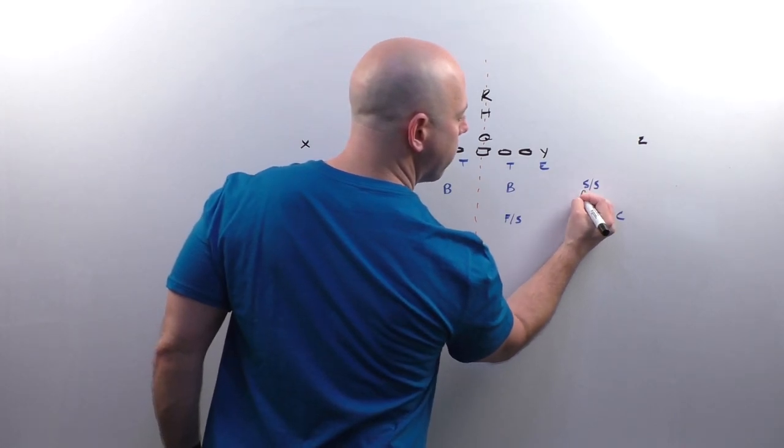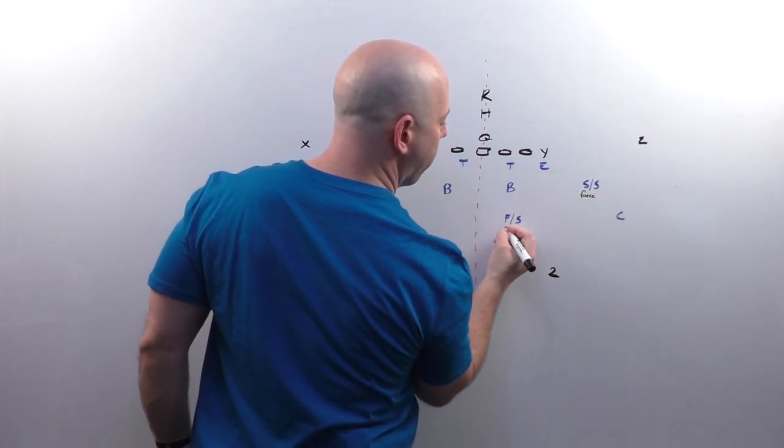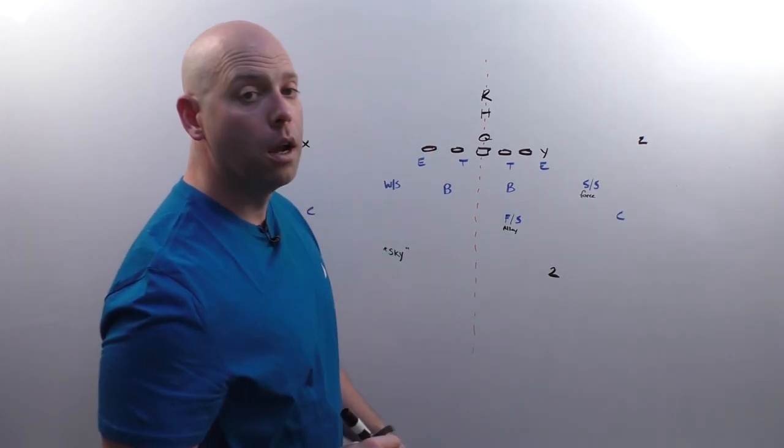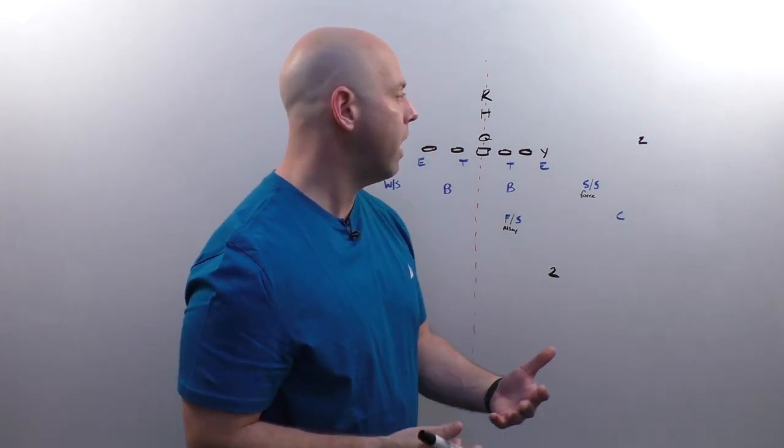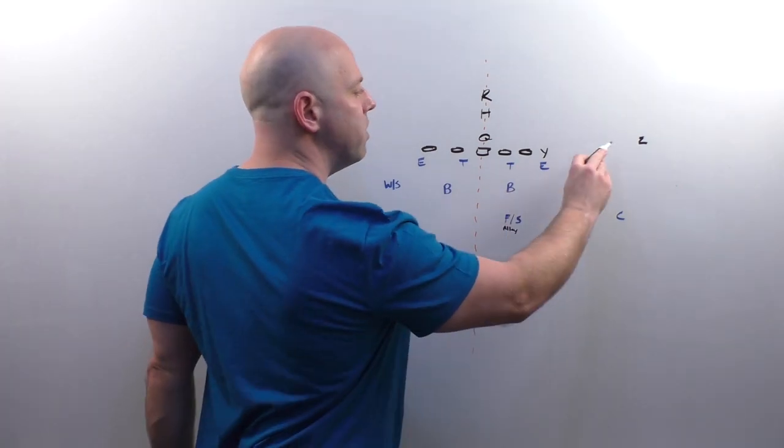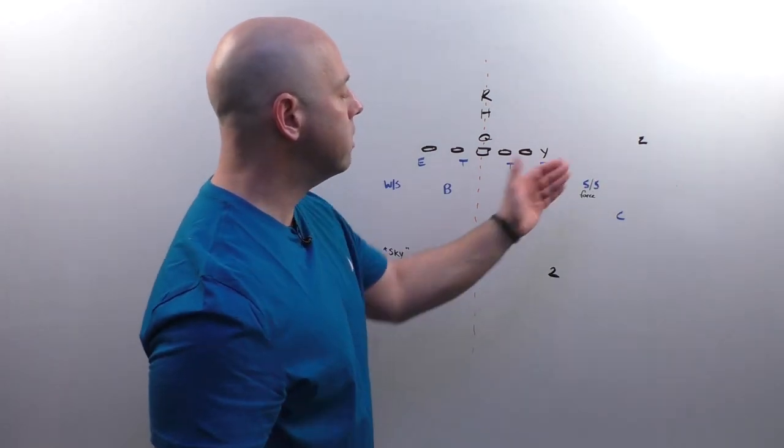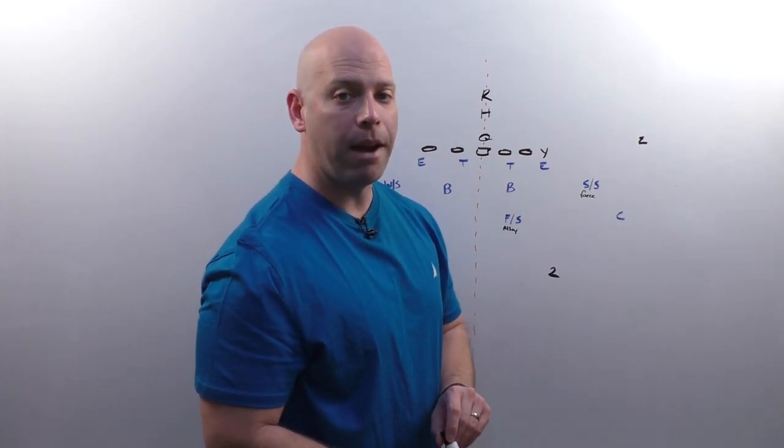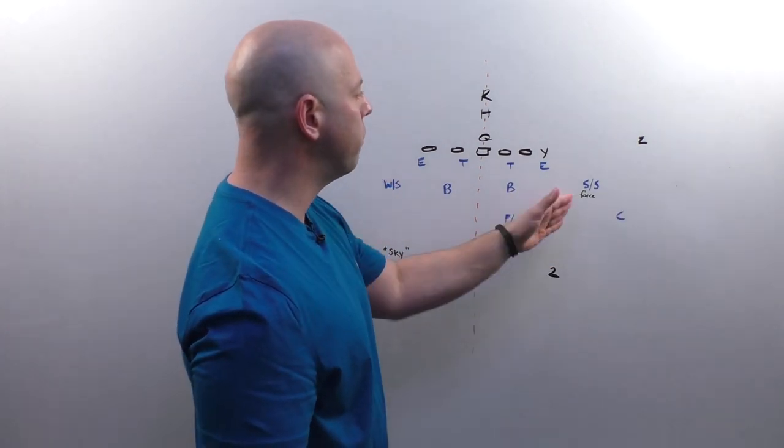So he is your force player. And if you're familiar with the umbrella, he would be our force. He would be our alley. And the umbrella is a really important part of what we teach in the 425 defense system. So he's going to be seven yards wide, three yards off. He's the force player. He's the pitch player on option. And he's responsible for the flat.